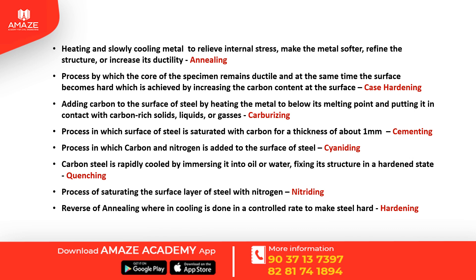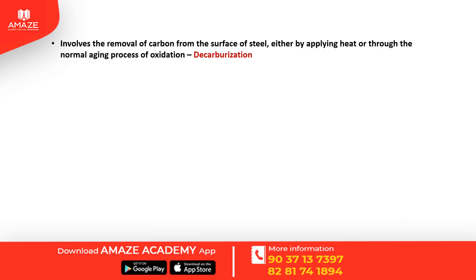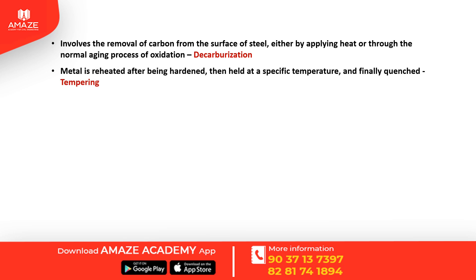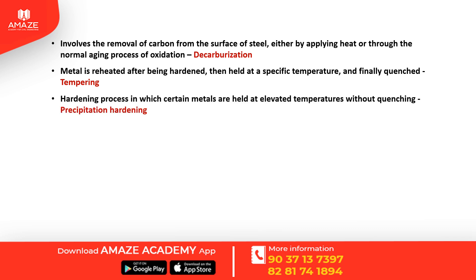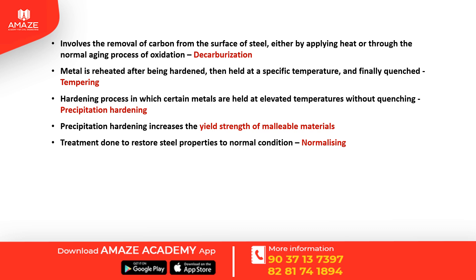Decarburization is the removal of carbon from the surface of steel, while carburization is the addition of carbon. Decarburization occurs by applying heat or through a normal oxidizing agent. Precipitation hardening involves holding the steel at elevated temperatures without quenching, which increases the yield strength of malleable materials. Normalizing is a treatment that restores steel to its normal condition.